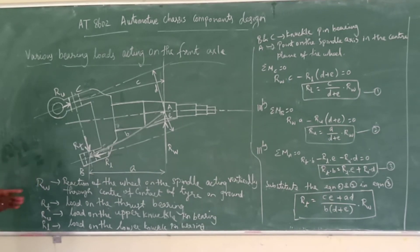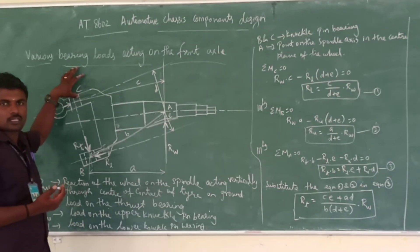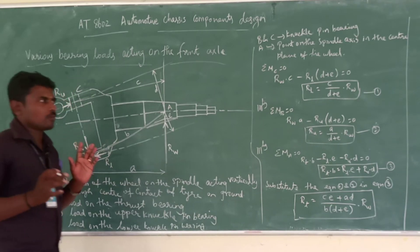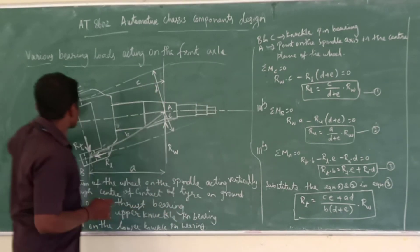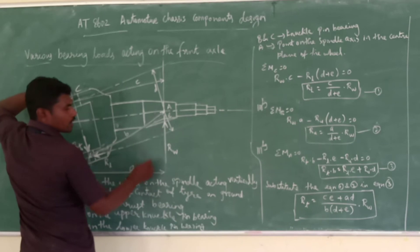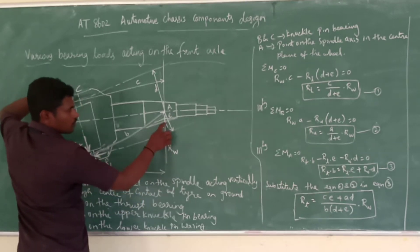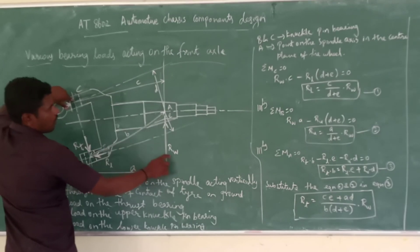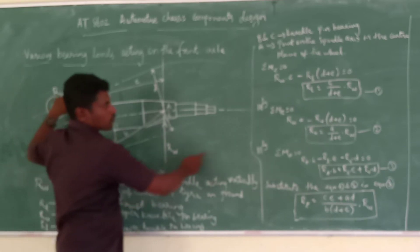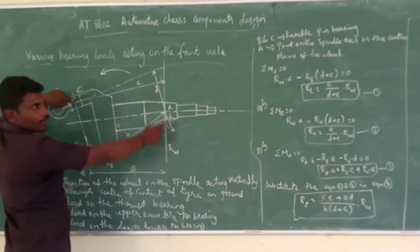First we need to take the moment about any one point. Here I am going to take the moment about point C, which is the upper knuckle bearing. The summation of moments will be zero. The vertical force RW acts at distance c from C — this is in the anticlockwise direction, so it is positive.